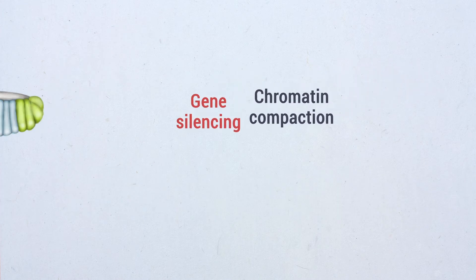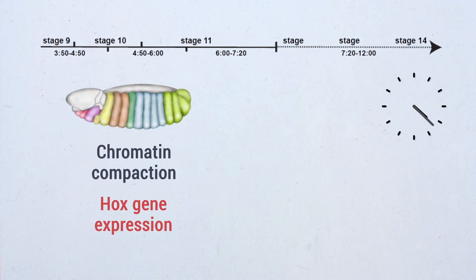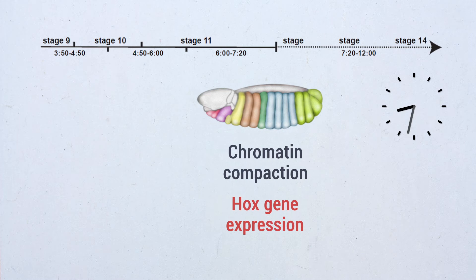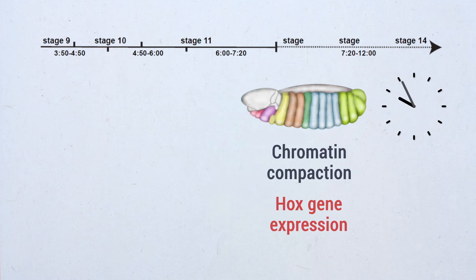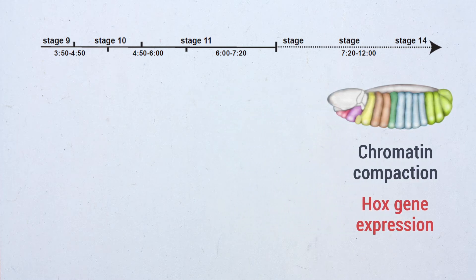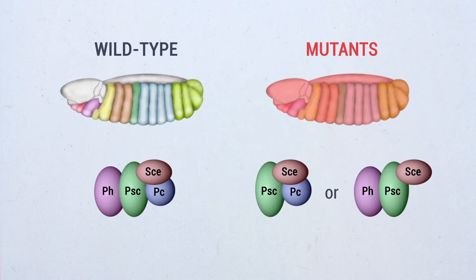In this study, in order to disentangle these two phenomena, we analyzed the time course of 3D chromatin compaction and Hox gene expression in wild type or in mutant embryos in which Polyhomeotic or Polycomb are deleted.